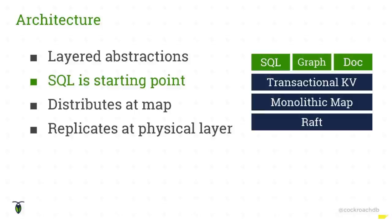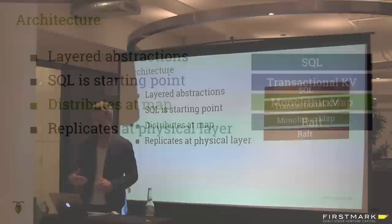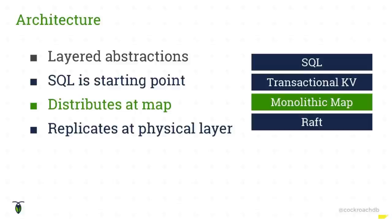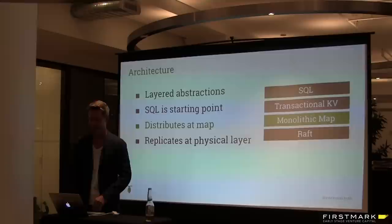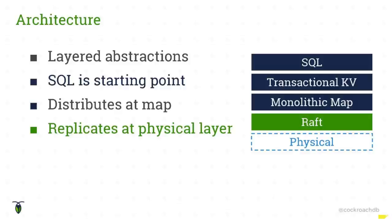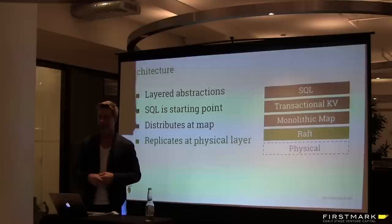The transactional key-value layer gives us a base upon which we can build other kinds of database personas — SQL, a graph database, or even a document store. Right now we're primarily a SQL database. Underneath the transactional key-value store is what I'm calling a monolithic sorted map, where data is distributed out to the various nodes across the cluster. We break that map into smaller contiguous key ranges, which are replicated using Raft, a consensus algorithm, writing each replica to lower-level physical storage.